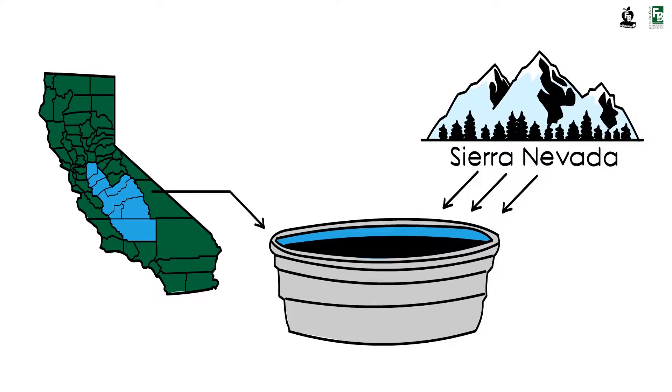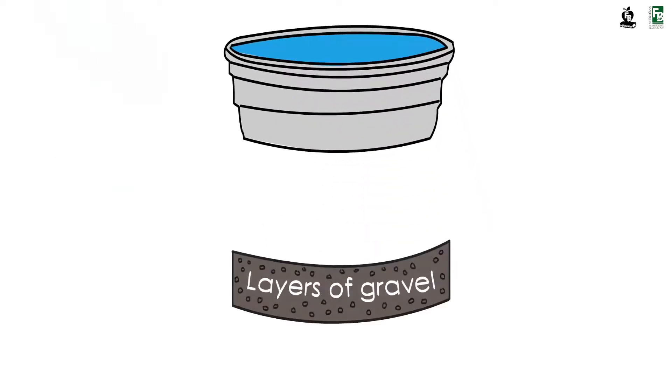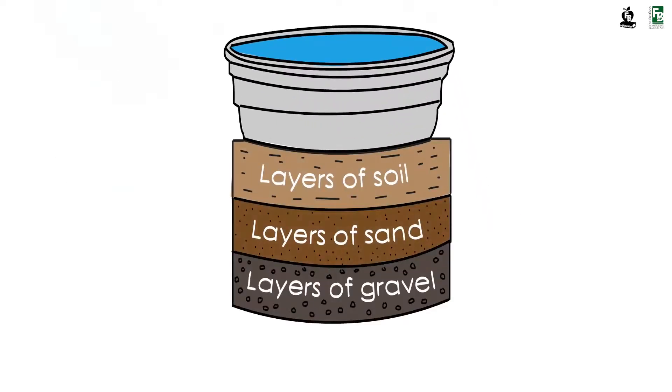On the bottom of what was once an ancient sea are layers of gravel, sand, and soil that literally form the earth beneath our feet and the aquifer we depend on for water.